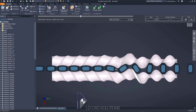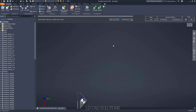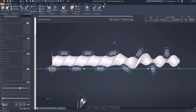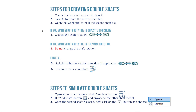Let's hit delete to stop this simulation and escape out of here. Let's head over into PowerPoint to take a look at the top level steps to create double shafts like we just saw. It's very straightforward — there's only six steps.